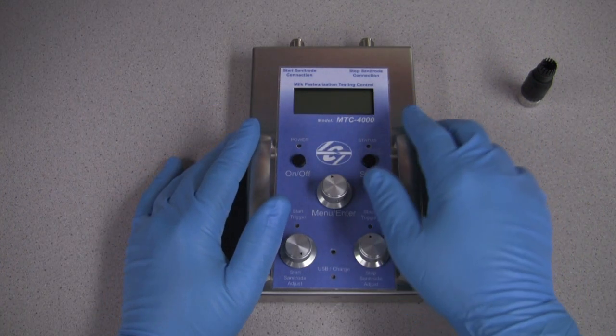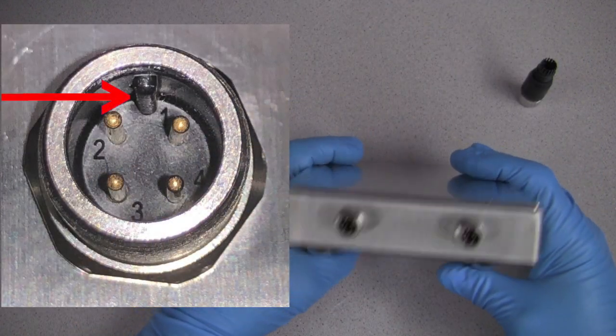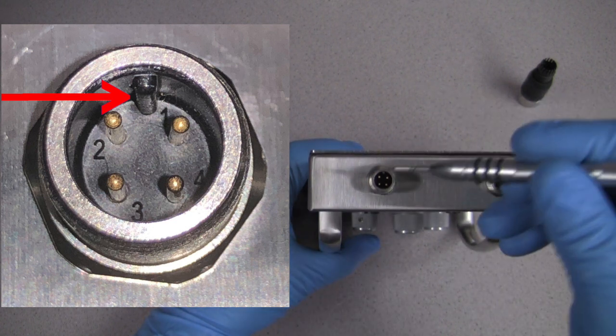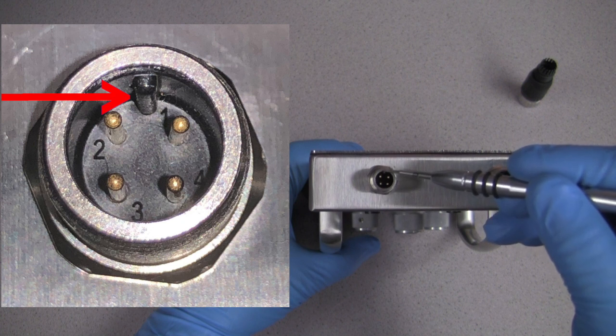The MTC4000 jack connections consist of a 4-pin configuration. As you tip the MTC4000 towards you, you can see a small plastic guide to the top of both the start side located on the left and the stop side located on the right.